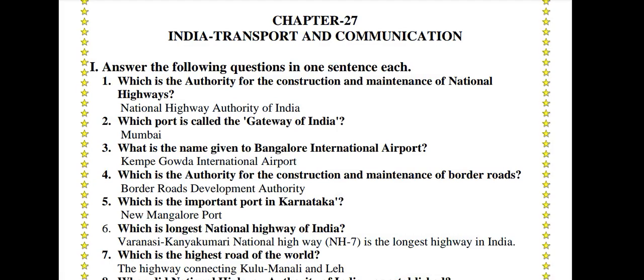Chapter 27: India Transport and Communication. Answer the following questions in one sentence each. Which is the authority for the construction and maintenance of National Highways? National Highway Authority of India. Which port is called the Gateway of India? Mumbai. What is the name given to Bangalore International Airport? Kempe Gowda International Airport.